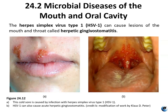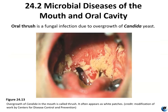Herpes simplex 1 can cause lesions of the mouth and the throat, called herpetic gingivostomatitis. Figure 24.12 shows a cold sore typical of herpes virus, as well as acute herpetic gingivostomatitis showing inflammation in the roof of the mouth and lesions in the throat. Oral thrush is a fungal infection — an overgrowth of Candida yeast. When it occurs in the vagina it leads to yeast infection; when it occurs in the mouth, it is thrush. Mumps is a viral infection of the salivary glands, with characteristic swelling.